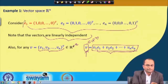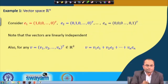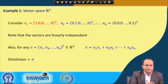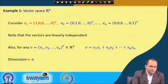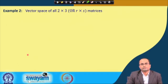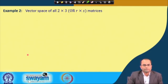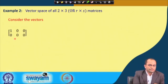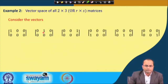We got a basis for R^n and the dimension is the number of elements in this set — there are n elements E1, E2, ..., En, so the dimension of R^n is n. Next, consider the example of the vector space of all 2×3 matrices. For simplicity we take 2×3, but the idea extends to r×s matrices. We consider 6 matrices where each has a 1 at one position and 0 everywhere else.